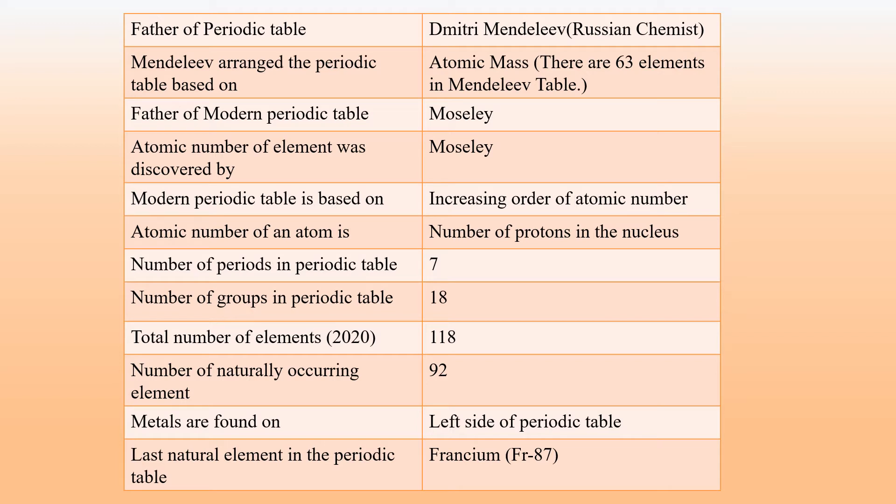Moseley arranged the elements on the basis of atomic number. The atomic number of an element was discovered by Moseley. The Modern Periodic Table is based on the increasing order of atomic number.